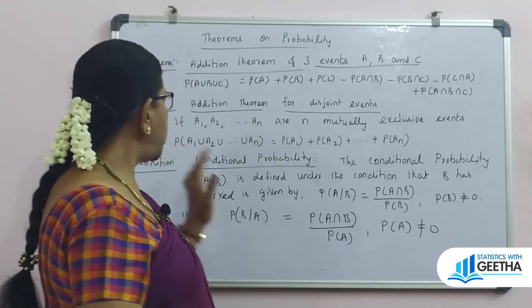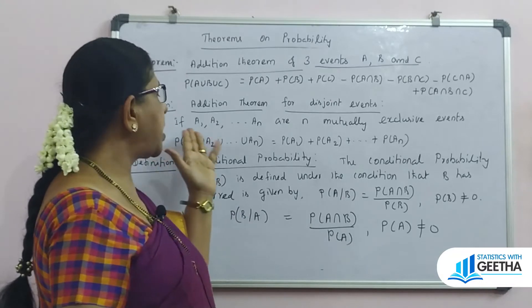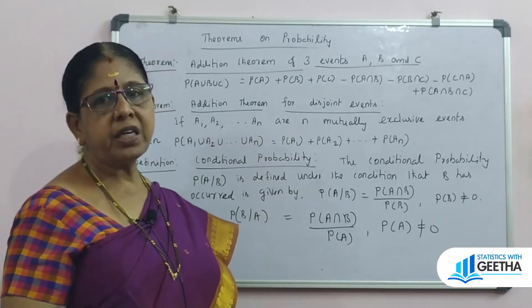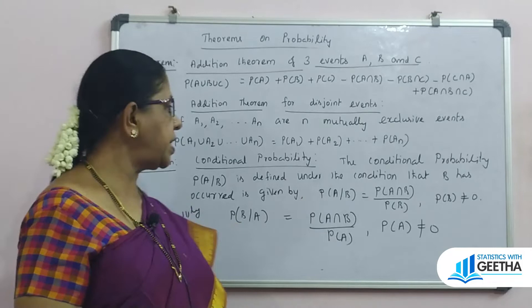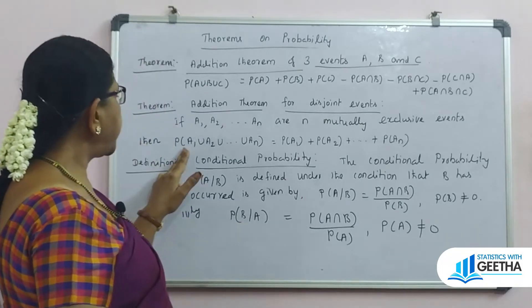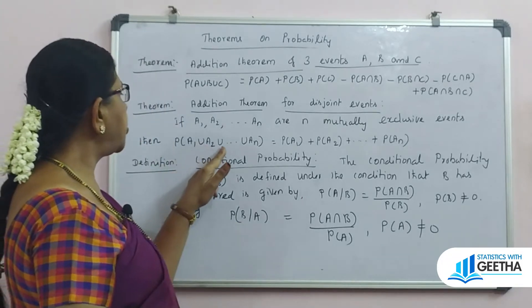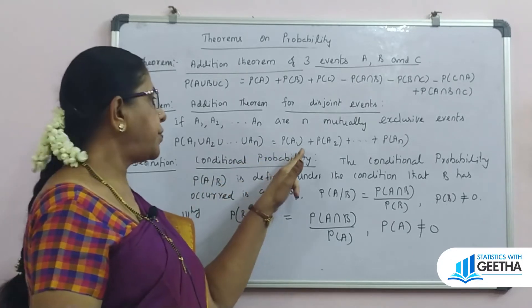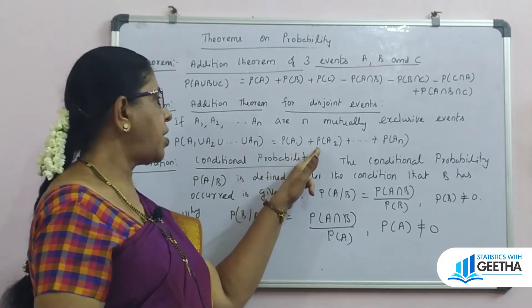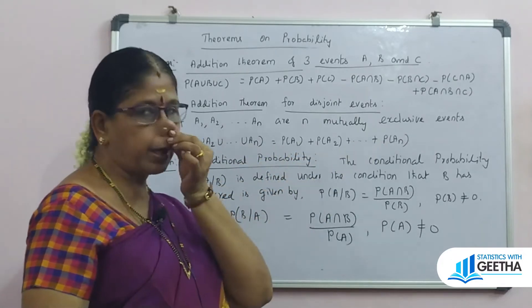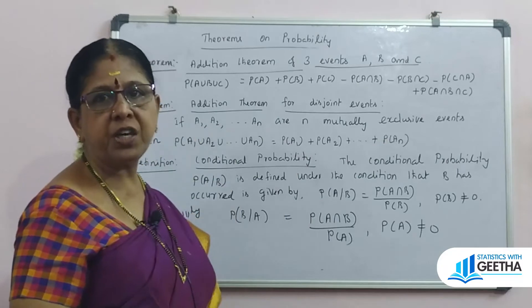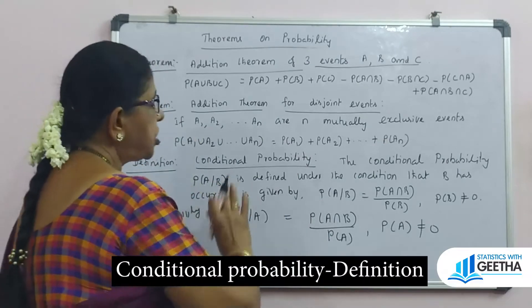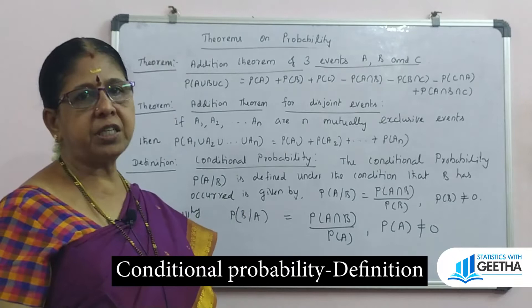The addition theorem for disjoint events: if A1, A2, ..., AN are N mutually exclusive events, then probability of A1 union A2 union ... union AN equals P(A1) plus P(A2) plus ... plus P(AN). This is obvious from Axiom 3.